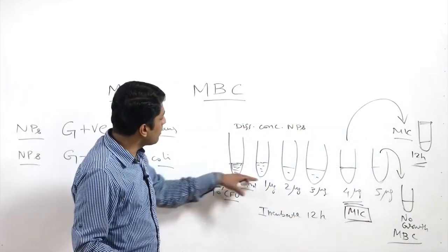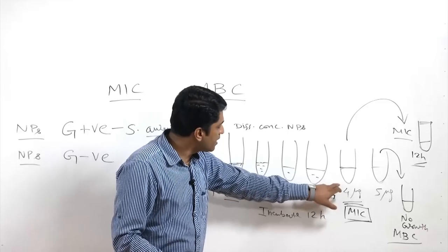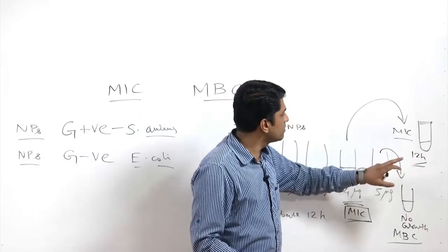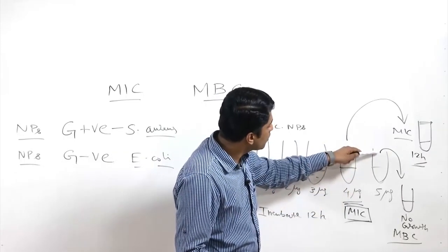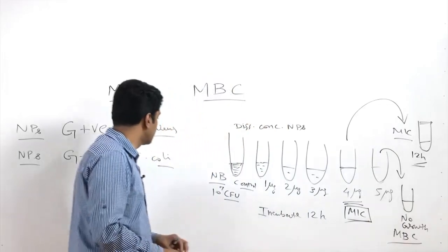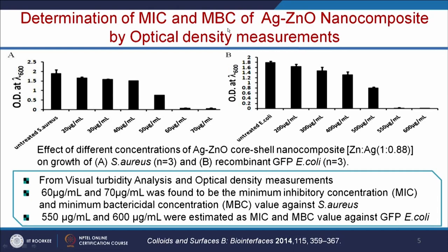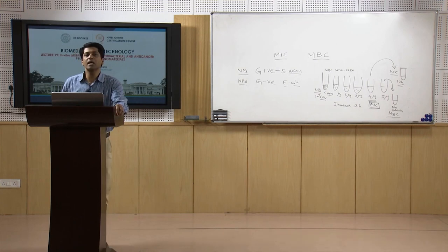The minimal inhibitory concentration and minimal bactericidal concentration can also be studied by optical density measurement, that is OD. Whenever you estimate DNA or protein, we mention absorbance at 260 or 280 nanometers, because your DNA or protein is absorbing. But whenever you use bacteria, we use the term OD — optical density — because here it is not absorbing, it is scattering the light. That is the difference between absorbance and optical density.